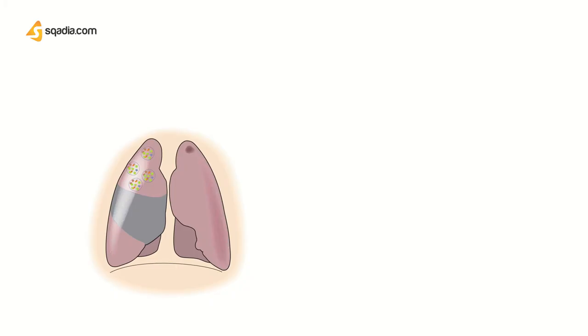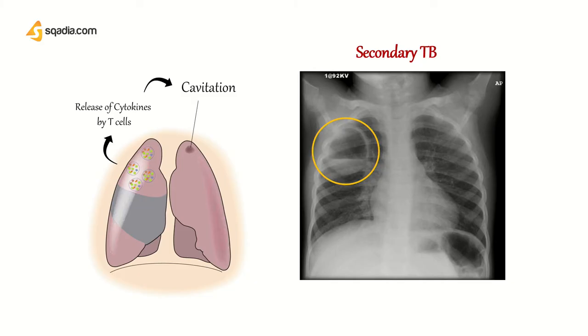The next type of TB is secondary TB, also called reactivation TB, because it occurs after primary TB that has been latent for years gets reactivated. The hallmark of secondary or reactivation TB is cavitation. This cavitation is produced by cytokines released from T cells — specifically memory T cells — causing this cavitation, which is a permanent finding visible on radiograph.